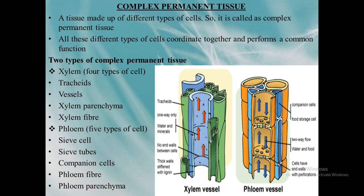Phloem is made of five types of cells: sieve cells, sieve tubes, companion cells, phloem fiber, and phloem parenchyma. Among these, phloem fiber is the only dead cell in phloem. Phloem is mainly used for food transportation in plants.